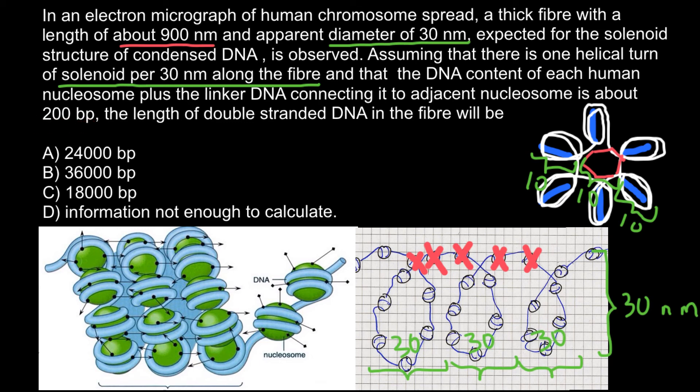So what was not given: that we have six nucleosomes per one turn. We are unable to solve it without this information. Basically, we have to multiply 200 by 6, and we would find that one turn would contain 1200 nucleotides. So 1200 per one turn.